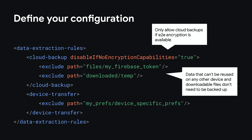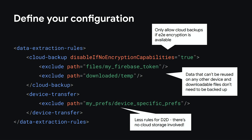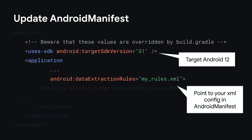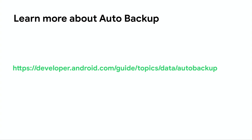We've set the disable-if-no-encryption-capabilities flag to true for cloud backups. This means that data will not be backed up to the cloud unless end-to-end encryption is available. Finally, we defined a more relaxed configuration for device-to-device transfers as there is no cloud storage involved in the process. Once your config is ready, you need to point to it in the Android manifest file using the dataExtractionRules attribute. Don't forget to target Android 12, as that's where the attribute was introduced. You can find more detailed instructions on configuring auto backup by following the link on this slide.